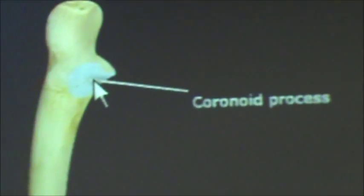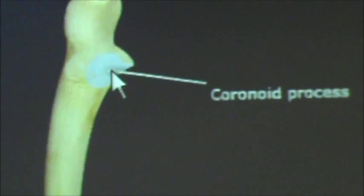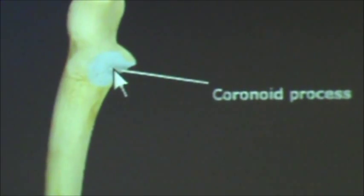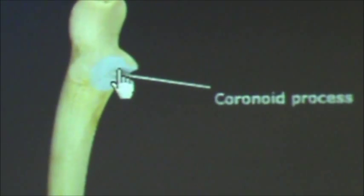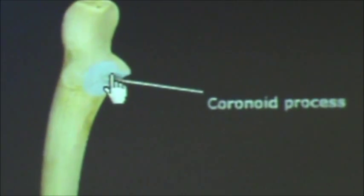Below that, we have the coronoid process, which articulates with the coronoid fossa of the humerus.